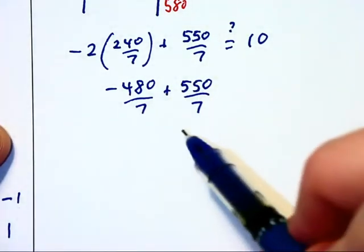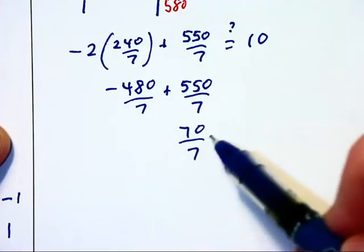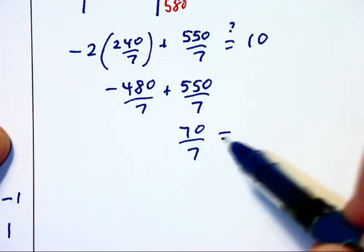We have negative 480 over 7, plus 550 over 7. Now subtracting, we get 70 over 7, which is equal to 10.